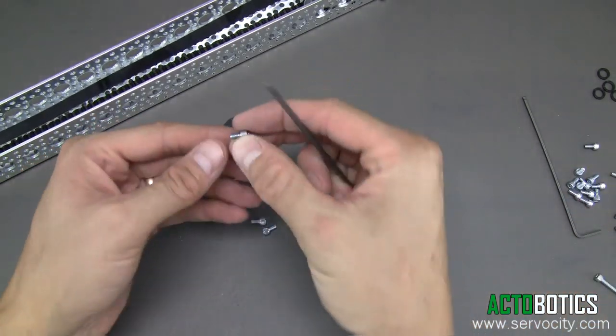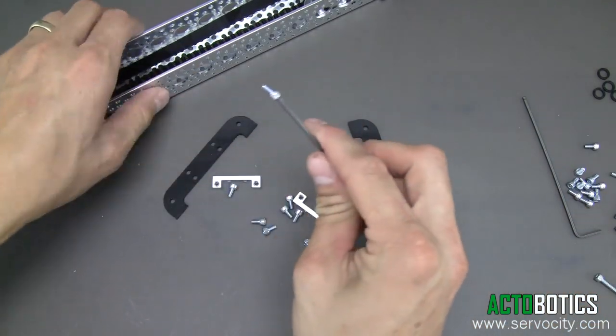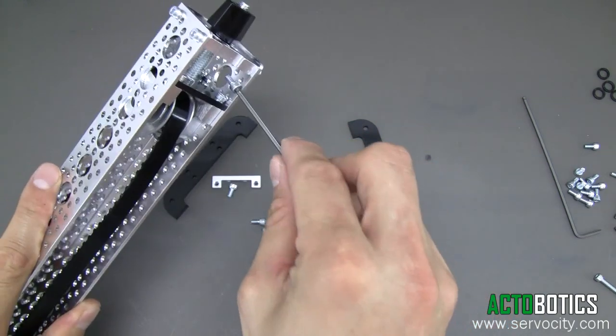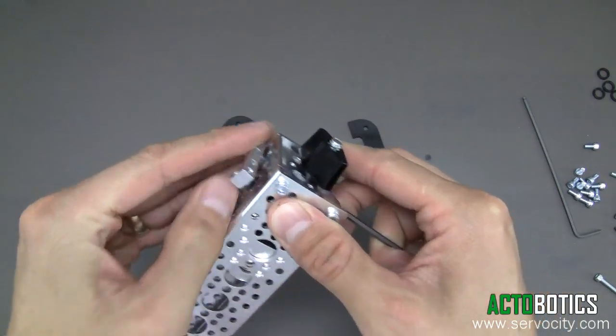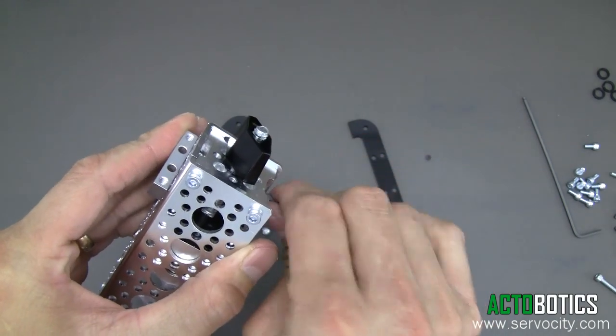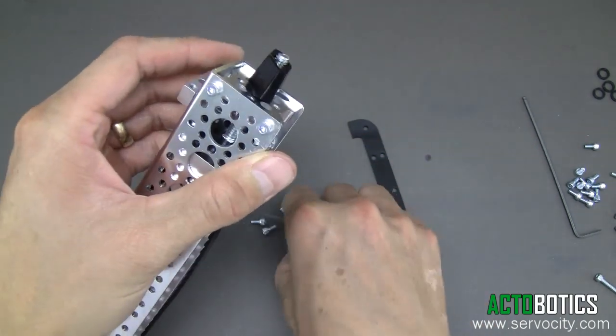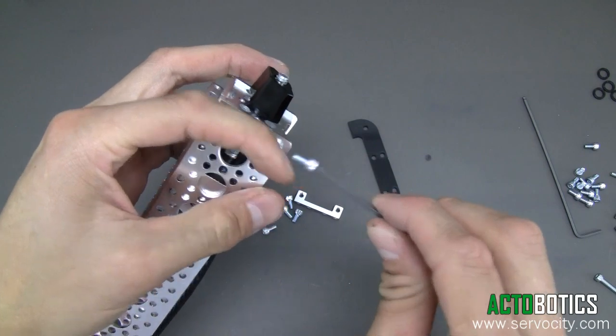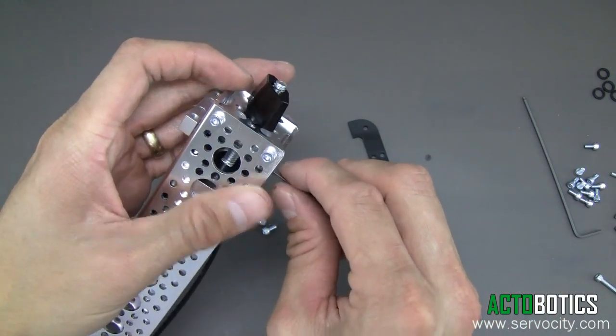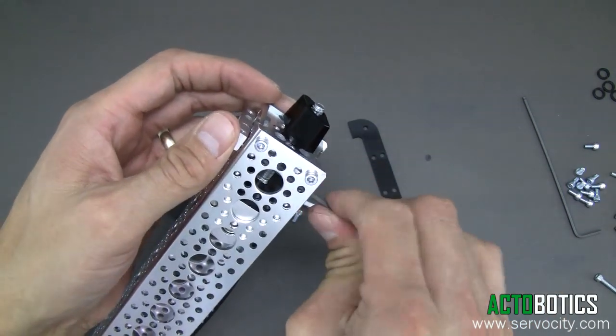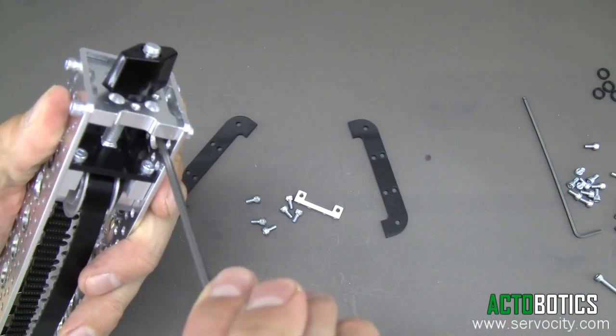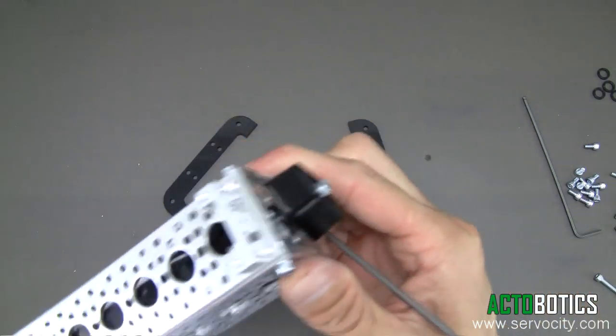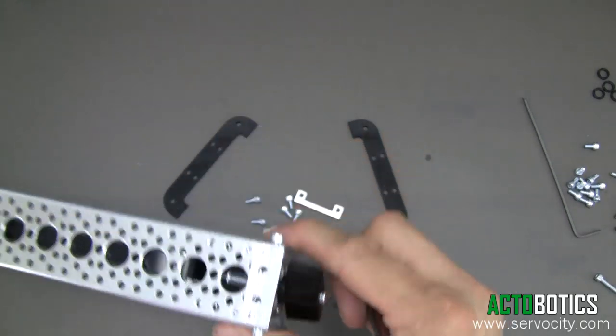Basically, you want to grab a couple of the 632 by 1 1⁄4 inch socket cap screws, put them in the very end right here. Go ahead and bolt this on like so. Grab another one here, bolt that in just like so. Tighten those down. You can see the way it needs to look at this point.